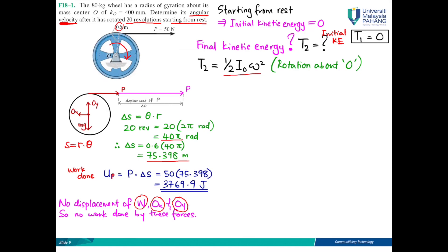I_O is m k_o squared, you will get 12.8 kg meter squared. When you substitute in this equation, you will get T2 equals 6.4 omega squared. This is the omega that we want to find, the angular velocity after it has rotated 20 revolutions.